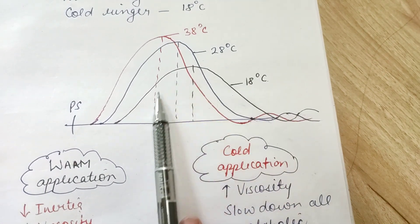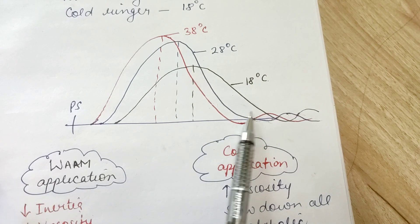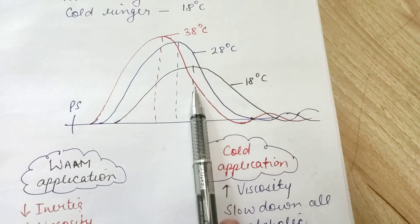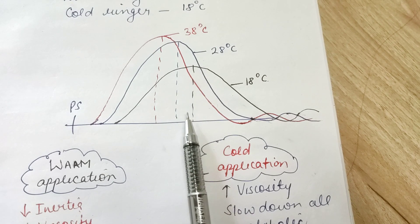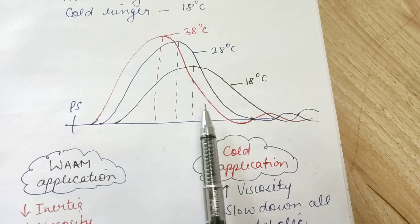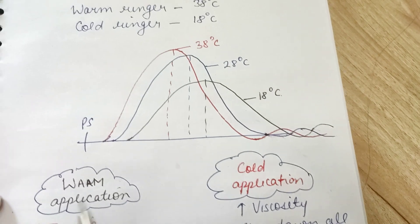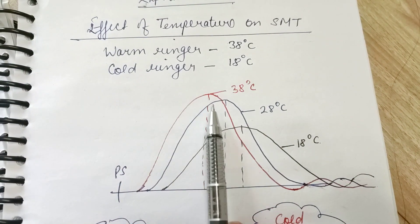So less force of contraction—with less force of contraction, the muscle contracts with less force. So that is all about this small experiment: the effect of temperature on simple muscle twitch.